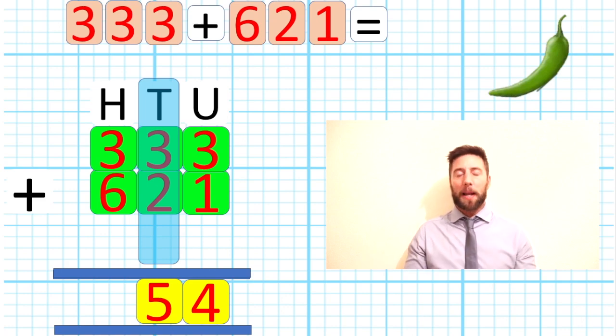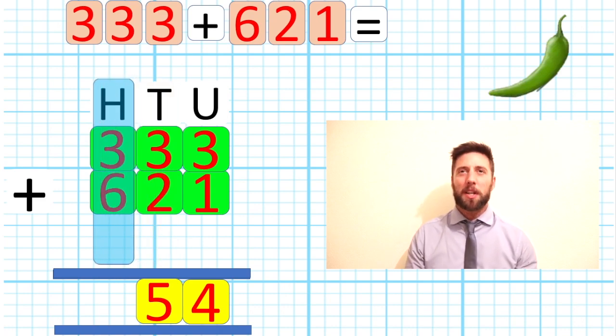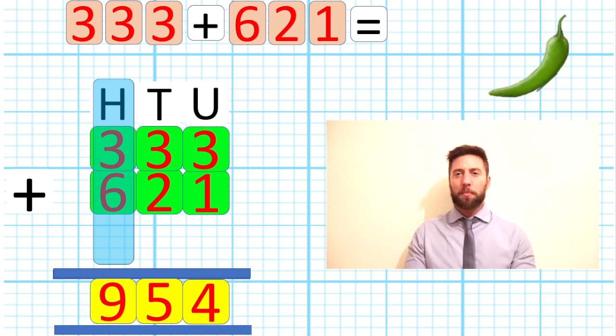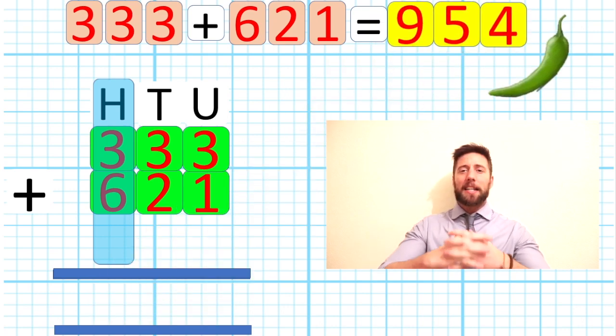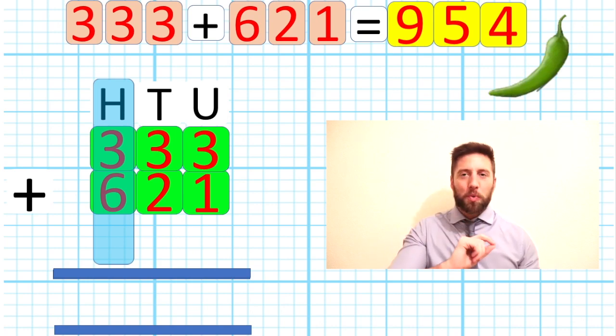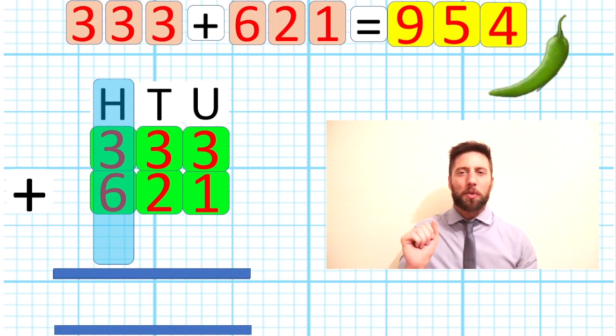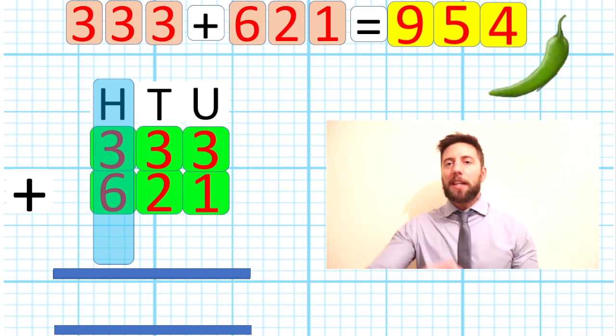Our tens column complete. Last but not least, we go into our hundreds column where we've got a 3 representing 300 and a 6 representing 600. Add the two together, we have 9. To complete our answer: 333 add 621 is 954. Easy? Yes. Well, the observant ones will see a little green chili in the corner - this was a very mild question, stage one, or a green chili challenge.